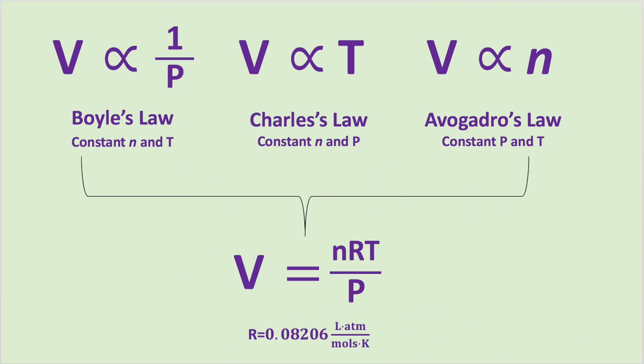From the ideal gas law, we can derive the simple gas laws because in each expression, you are holding certain components constant. For example, Boyle's law states that volume is indirectly proportional to pressure when moles and temperature are held constant. The following diagram shows how you can derive each of the simple gas laws from the ideal gas law.